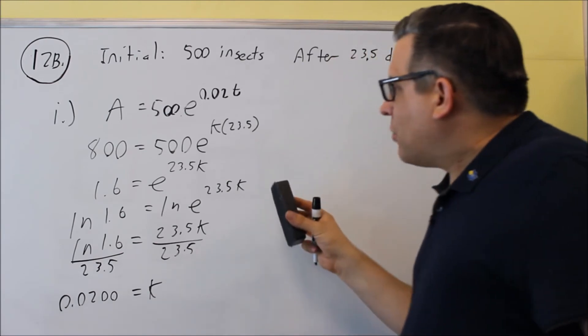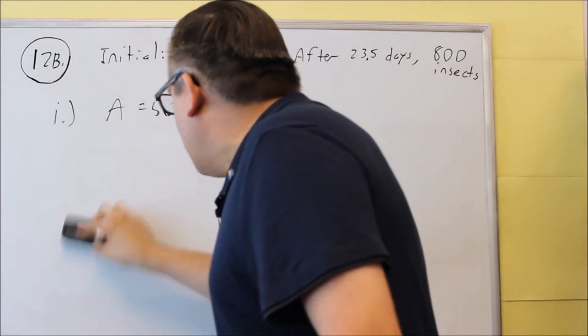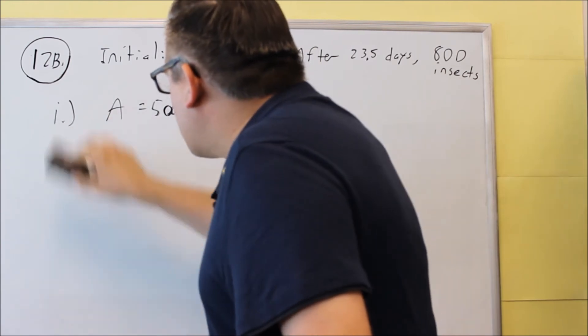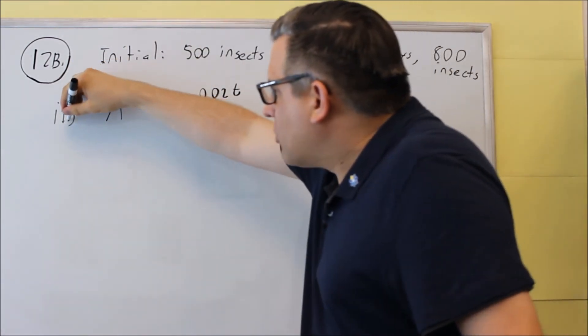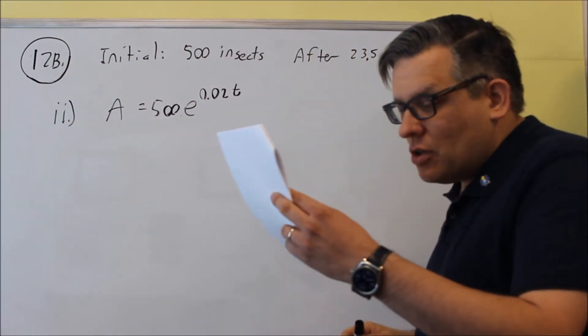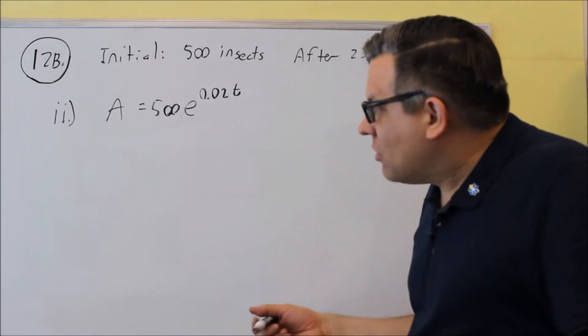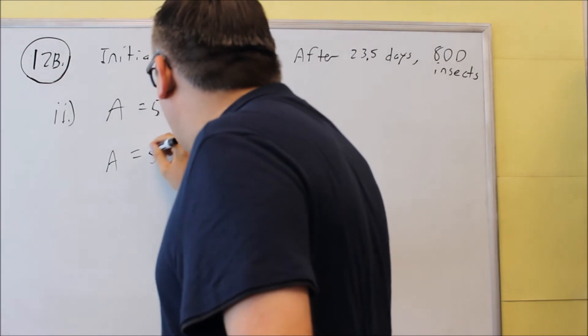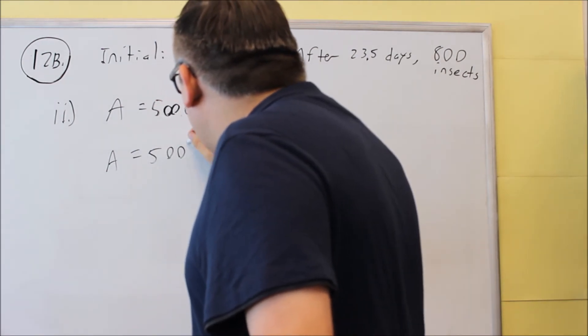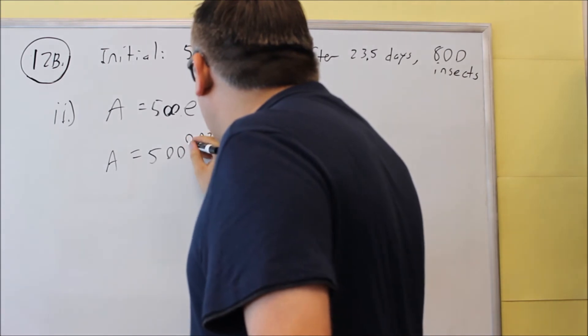So now that we have that complete, so hopefully you have all these steps, going to erase this, and then we have the second part, so now we're going to do Part II. So Part II, we need to use this formula, and it says, what is the insect population after 10 days? So that means that we've got to put a 10 now in here for the T value. So 0.02 and then times 10.